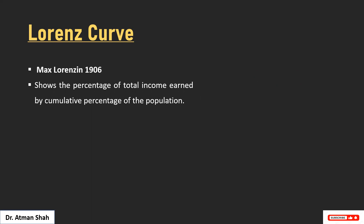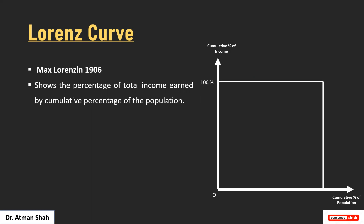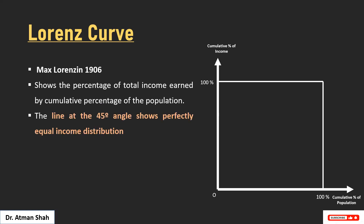So what is the Lorenz curve? Max Lorenz in 1906 came up with the idea of this curve, which shows the percentage of total income earned by the cumulative percentage of the population. On the x-axis we have cumulative percentage of population, and on the y-axis we have cumulative percentage of income.